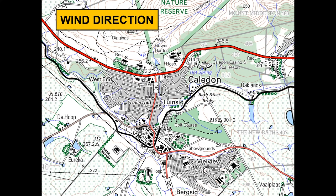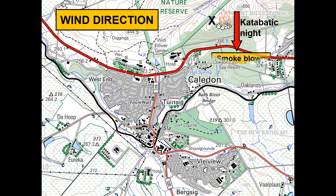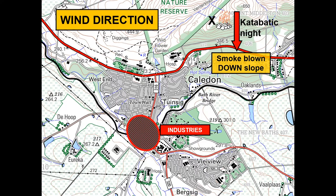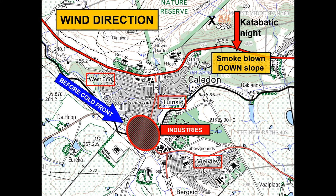When determining wind direction should there be a forest fire: due to a katabatic wind at night, the smoke will blow down the slope. In this area you can see industries, and right next to the industries you have areas of West End, Teinsug and Flaview. The pollution from the industries will blow over Flaview before a cold front, and over Teinsug just after a cold front.